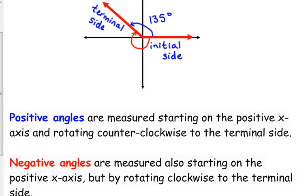So this would be negative 225 degrees. If the positive angle is 135, the negative would be negative 225. We'll talk about that here in a second. But the important part right now is counterclockwise is positive, clockwise is negative. We start in the same place for each one.